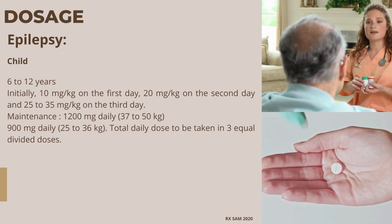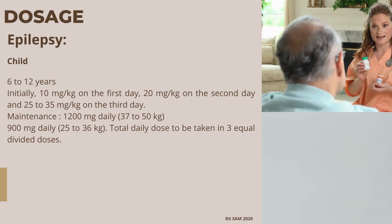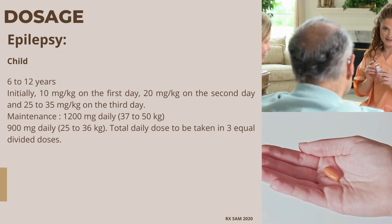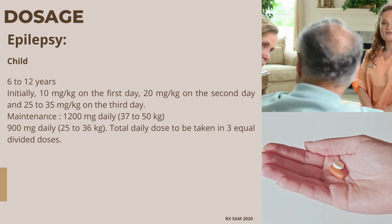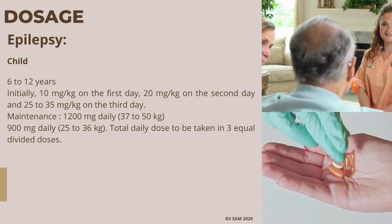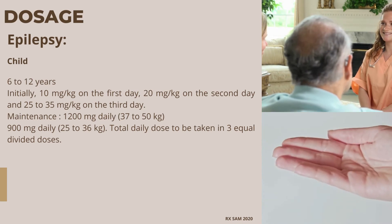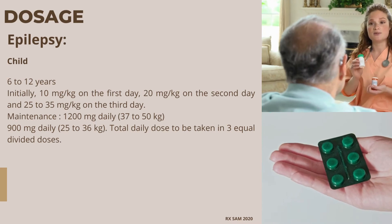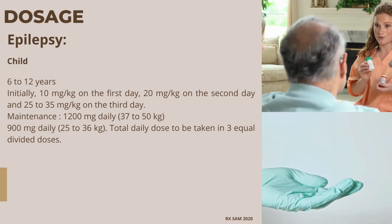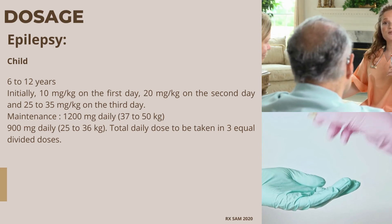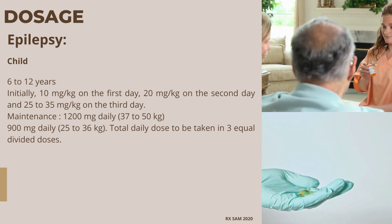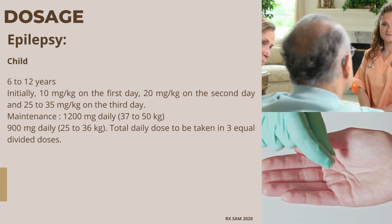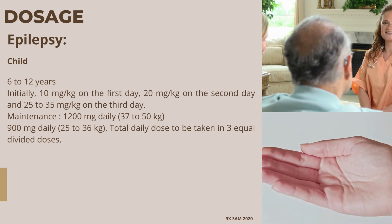Dosage for children with epilepsy, aged 6 to 12 years: initially 10 mg/kg on the first day, 20 mg/kg on the second day, and 25 to 35 mg/kg on the third day. Maintenance: 1,200 mg daily for 37 to 50 kg; 900 mg daily for 25 to 36 kg. Total daily dose to be taken in three equal divided doses.